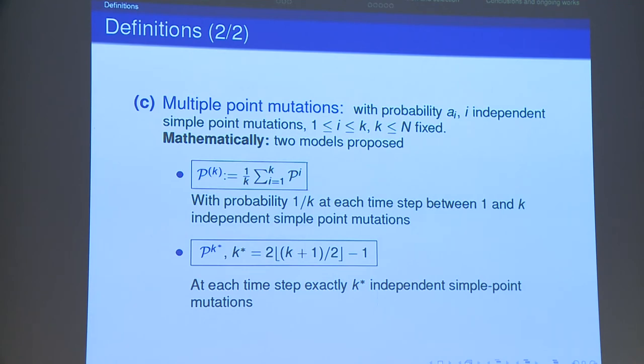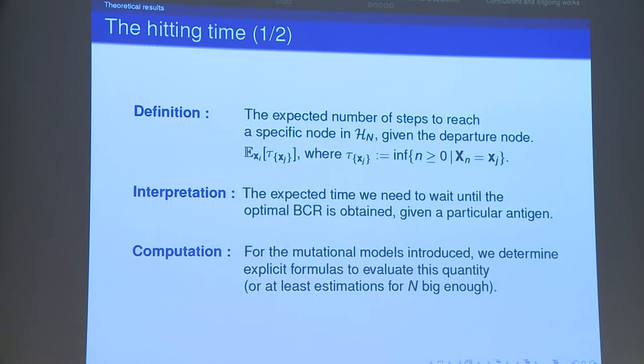Finally I propose here also another mutational rule, well a class of mutational rules which is the multiple point mutations. That means that at each time step with given probability A_i I am allowed to do i independent simple point mutations with i between 1 and k and k fixed. In this context once we fix k I propose two variants of the model of multiple point mutations. In the first case with equal probability 1 over k I am allowed to do between 1 and k mutations. And in the second case I always do exactly k star mutations at each time step where k star is the greatest value smaller or equal to k. We were interested in understanding how the typical time scales of state space exploration change depending on the introduced mutational rule. It is for this reason that we got interested in studying the hitting time.